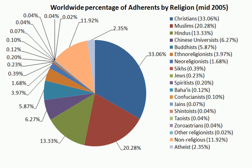Central concepts in the Vedas are satya and rta. Satya is derived from sat, the present participle of the verbal root as, meaning to be, to exist, to live. Sat means that which really exists — the really existent truth, the good. Rta, meaning that which is properly joined, order, rule, truth, is the principle of natural order which regulates and coordinates the operation of the universe and everything within it.